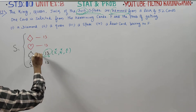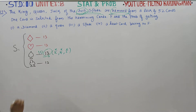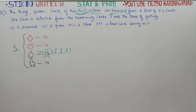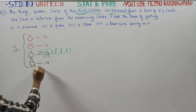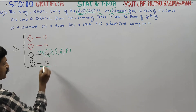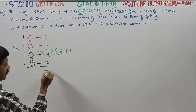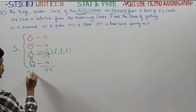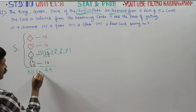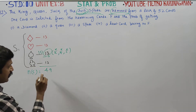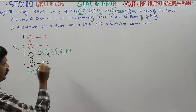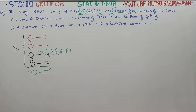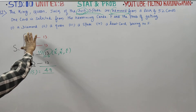The total cards are 52. Since 3 cards are removed, n of S, the sample space, is equal to 52 minus 3, which is 49.